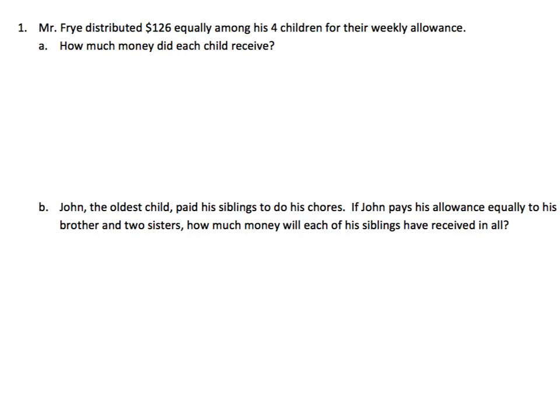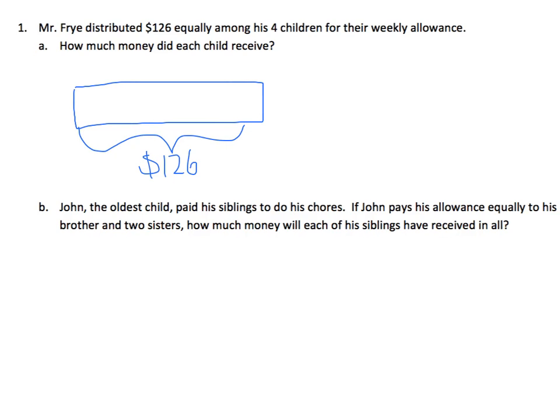The question reads: Mr. Fry distributed $126 equally among his four children for their weekly allowance. Part A asks, how much money did each child receive? We need to figure out what we know from reading the question. We know that Mr. Fry gives $126, so our total amount of money — shown on a bar diagram — is $126.